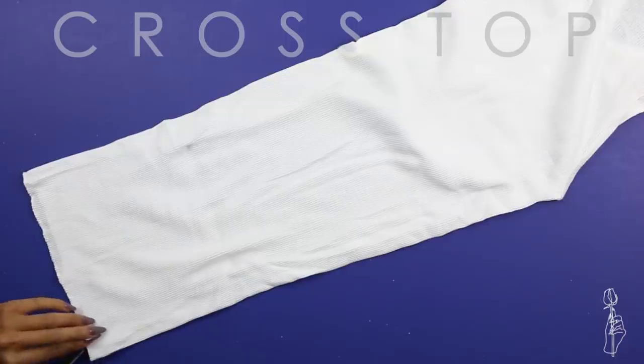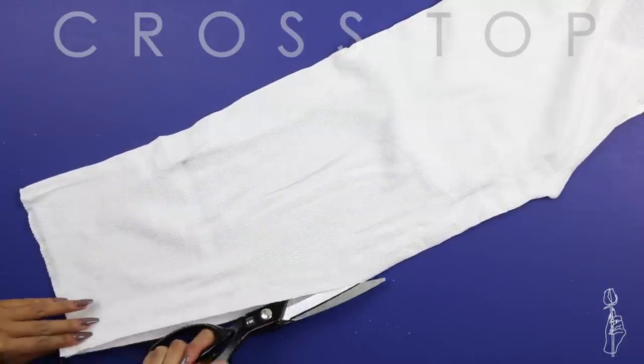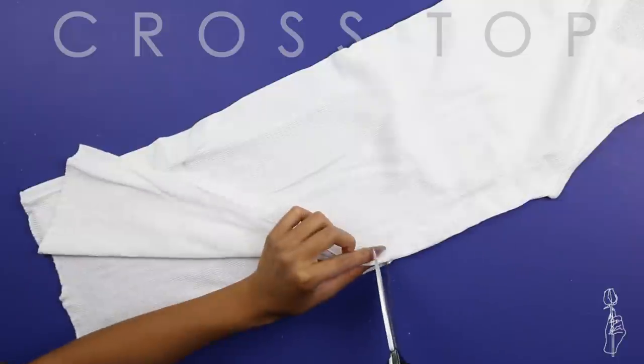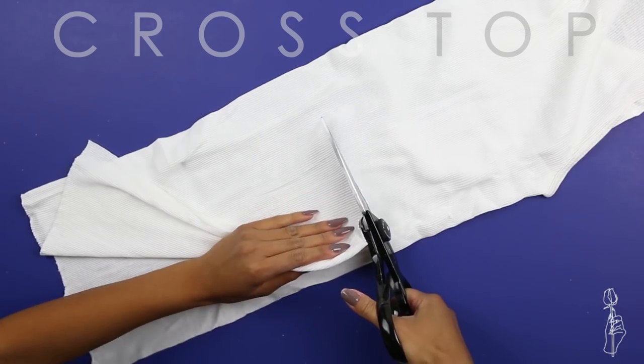Okay, so to make the crop top, all you do is find the length of how long you want your crop top to be, and then you cut the side seams up to that length. Cut across, and then cut all the way back down. That way you could take out the whole back side.